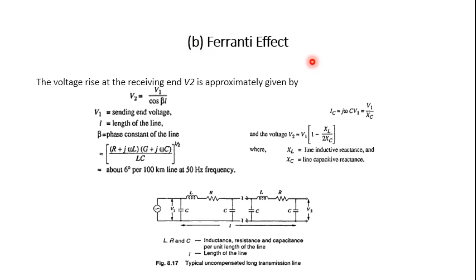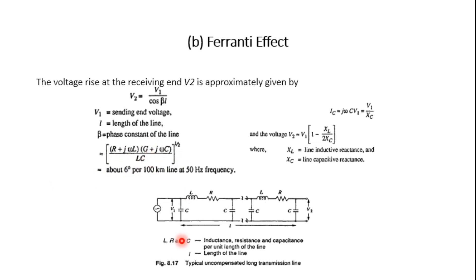Next is the Ferranti effect. For a long uncompensated transmission line, there is a voltage rise at the receiving end. The receiving end voltage V₂ is approximately given by: V₂ = V₁ / cos(βl), where V₁ is the sending end voltage, l is the length of the line, and β is the phase constant of the line.